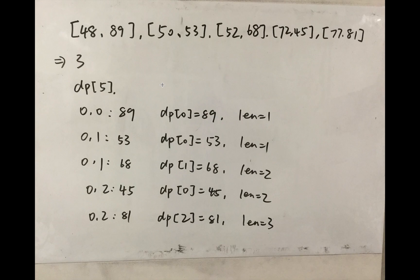Well, you see if we choose the first envelope then we cannot pick any envelopes because the height of the first envelope is very large. So we do not pick that one. And then we pick the second one which is 50 and 53. And then we can keep the 52 and 68. And then we cannot pick the 72 and 45 because it is less than the previous height.